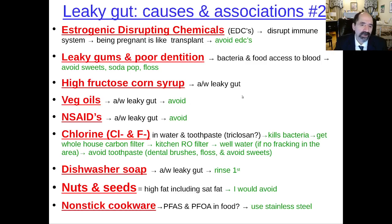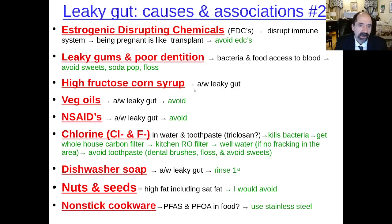High fructose corn syrup is associated with increased risk of leaky gut, so you shouldn't be eating anything with that in it. Vegetable oils are associated with leaky gut — just avoid them. NSAIDs — avoid them.